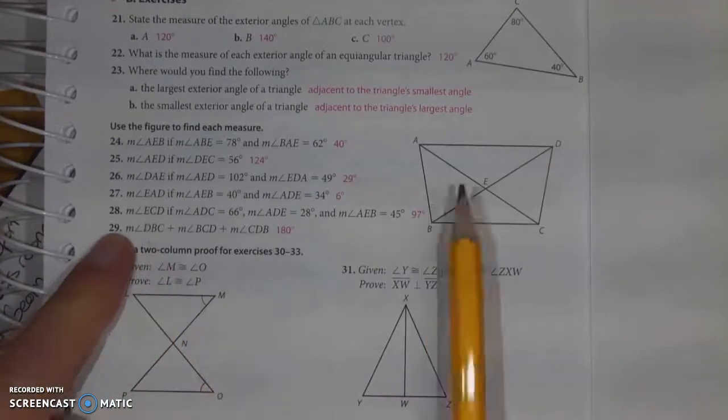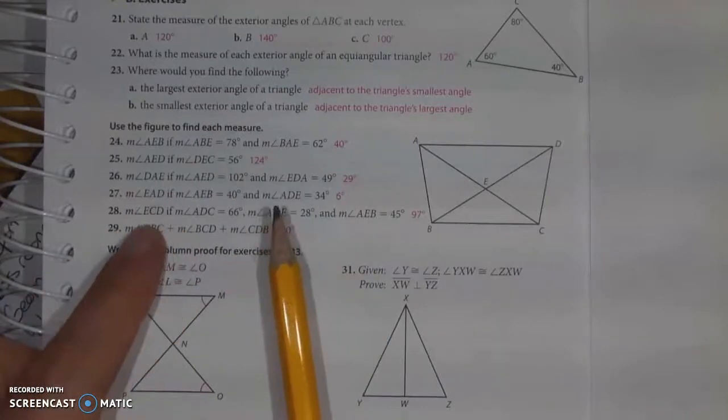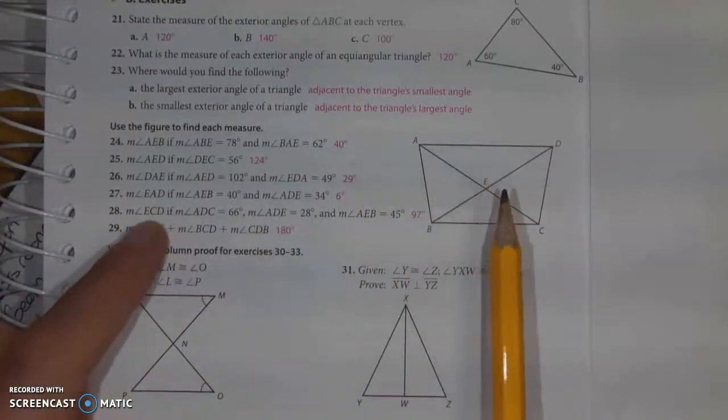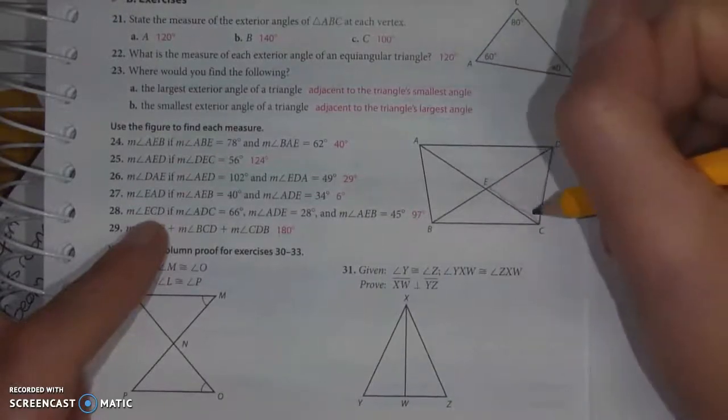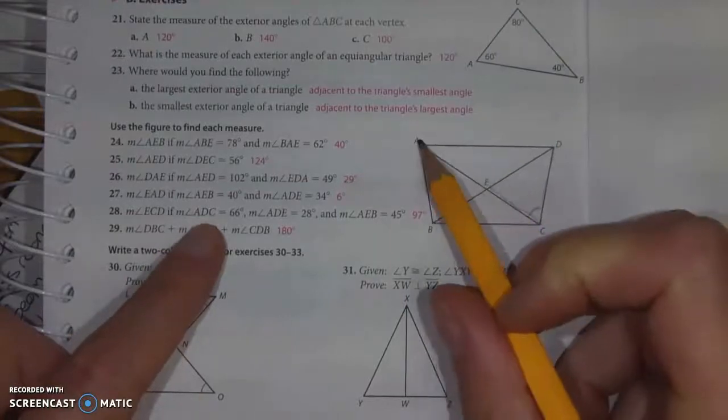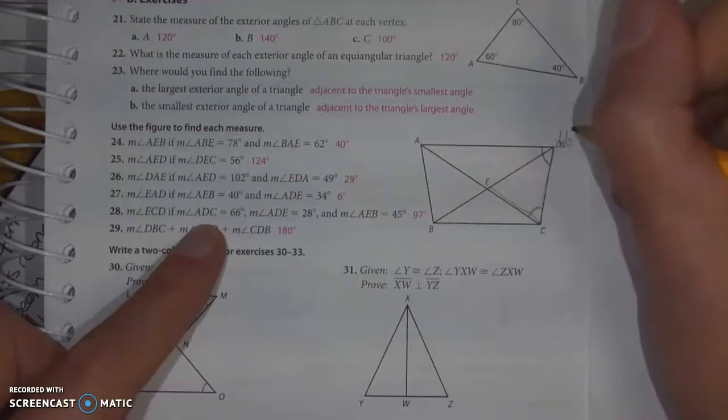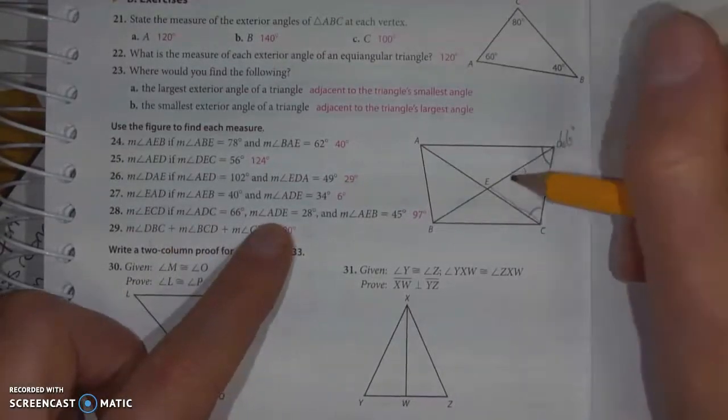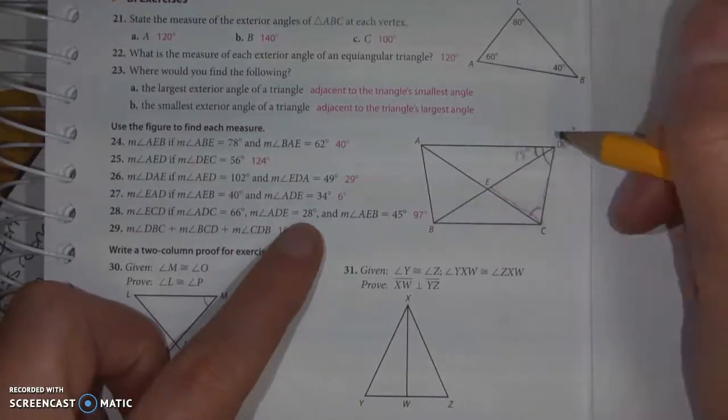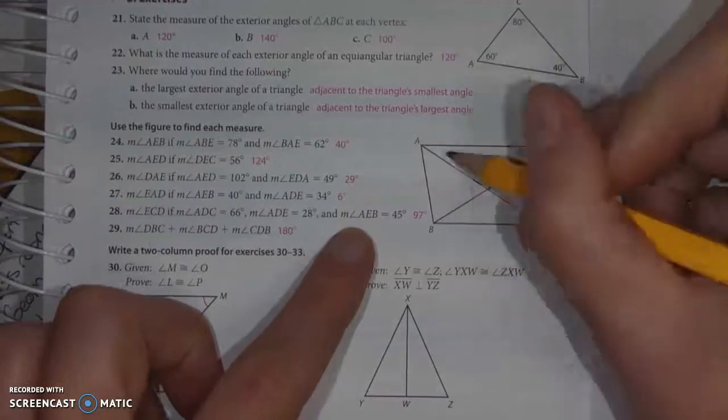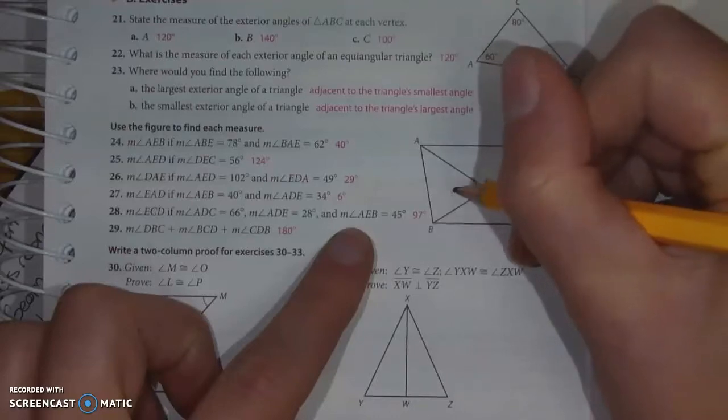So with 28, feel free to use a pencil to draw very lightly over the picture in the book, just so you can use the picture that it gives you. So I want to find ECD, so ECD makes this angle here. If ADC is 66 degrees, and ADE is 28 degrees, and AEB is 45 degrees.